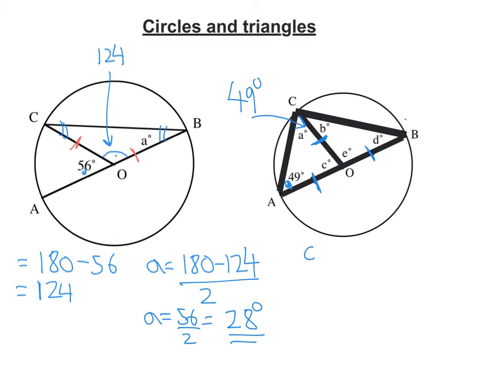I'm going to work out what C is, because C is going to be 180 minus 2 lots of 49. And if I do that, you're going to get C is 82.